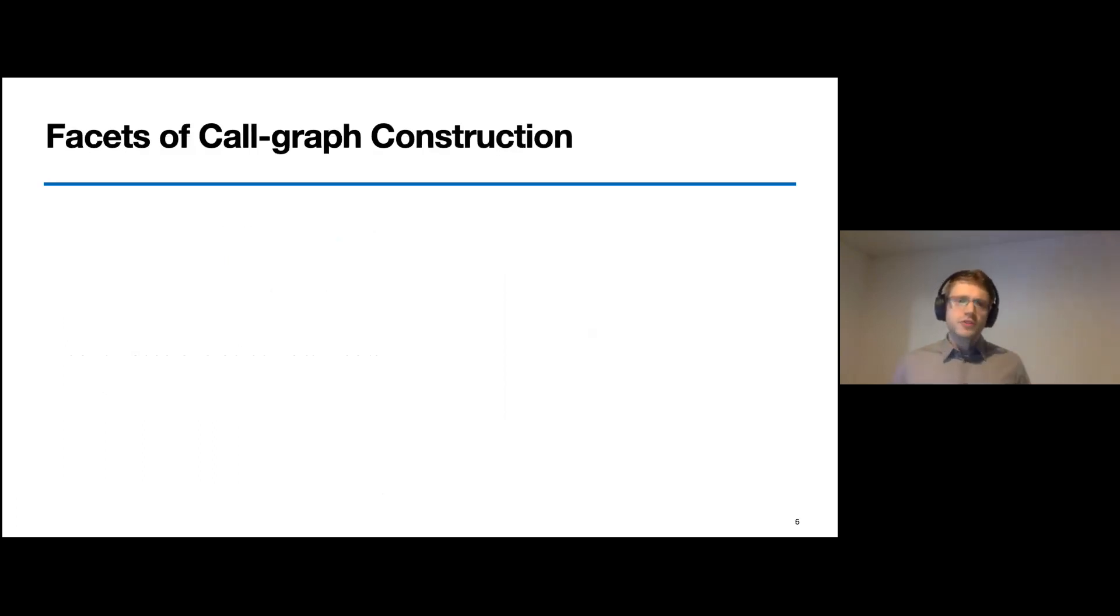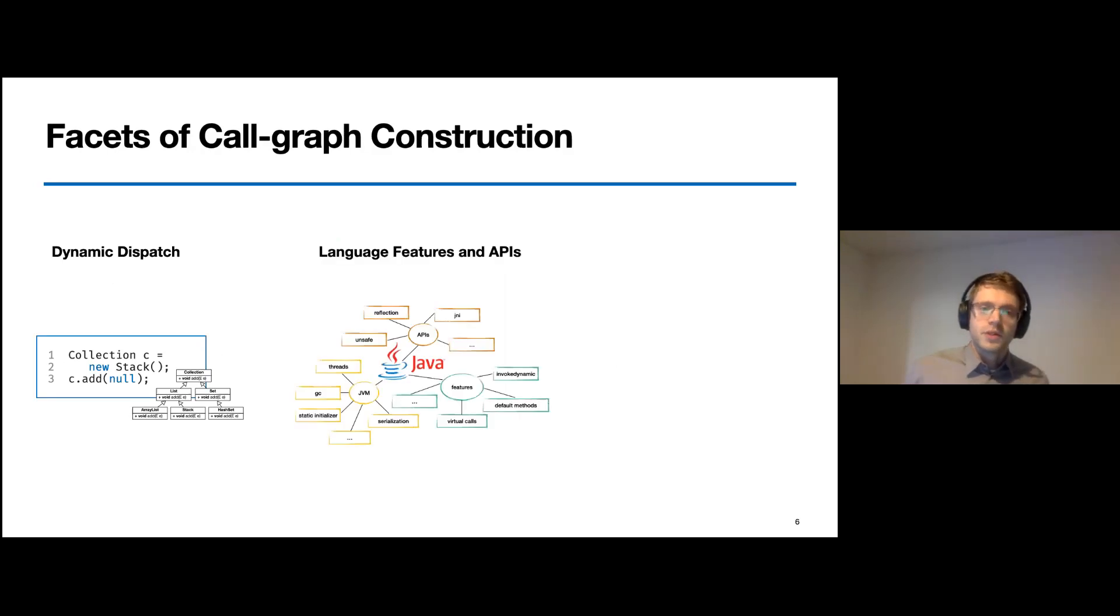Call graph construction has a very long history of research reaching back into the 70s. So I also want to mention why they are still interesting today. When we look back, we realize that much of the previous research in the compiler and static analysis community on call graph construction for object-oriented programs focused on the resolution of dynamically dispatched method calls.